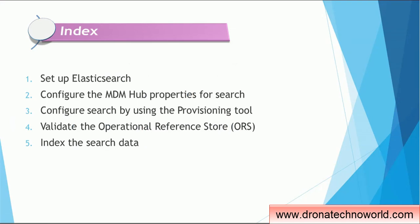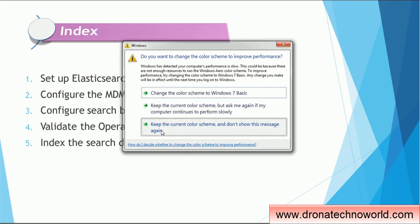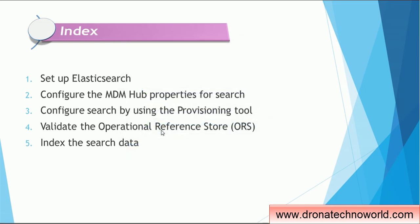Configuration of Elasticsearch in MDM requires five major steps. The very first step is to set up the Elasticsearch software itself, then configure the MDM hub properties for search. MDM hub properties involves MDM hub server properties and MDM hub process server properties. Once we configure the hub properties, we can configure the provisioning tool for Elasticsearch. The fourth step is validation of ORS, and the fifth step is indexing the data. Steps one to three are the main steps for configuration, while steps four and five are automatically handled many times.